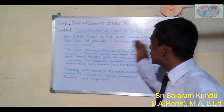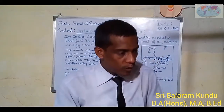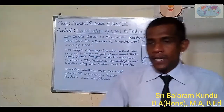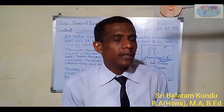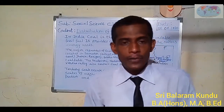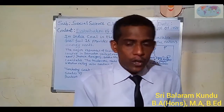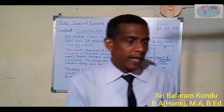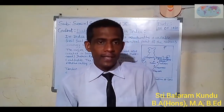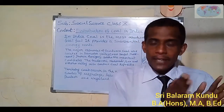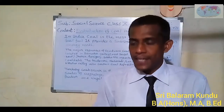Summarizing the topic: coal is one of the most important non-renewable energy resources and fossil fuels, used for power generation. It is made by compression of plants over a long geological time period, and is classified in two ways. According to carbon content, coal is classified into four categories: anthracite, bituminous, lignite, and peat. According to geological time period, it is classified into two types: Gondwana coal and Tertiary coal.